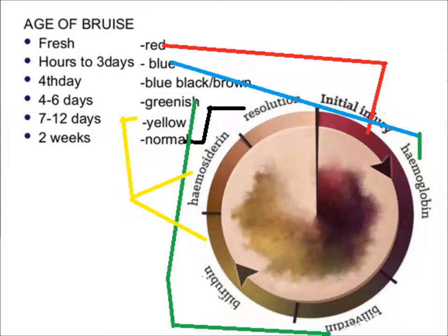When there is a bruise, there is injury and rupture of blood vessels, which leads to accumulation of blood. This causes a red-blue discoloration, followed by greenish, then yellowish, then brown discoloration, and after 14 days the skin returns to normal.